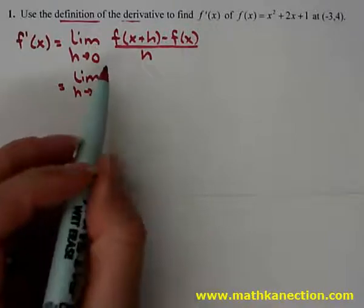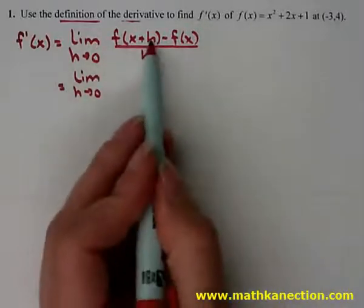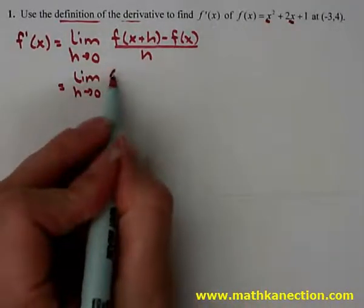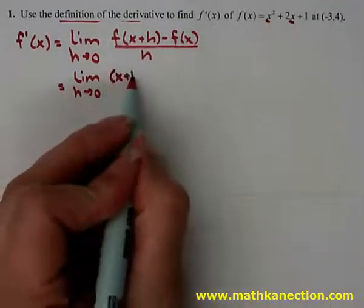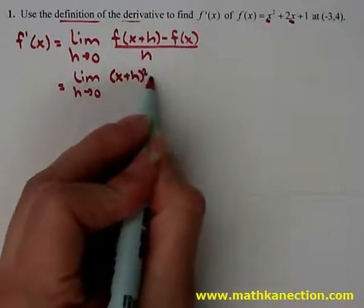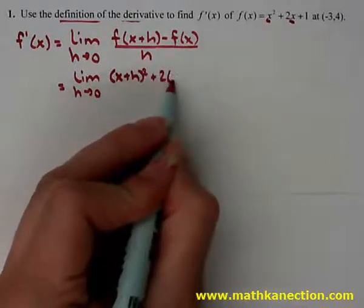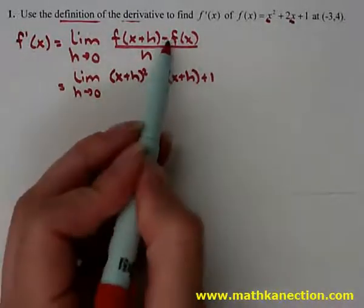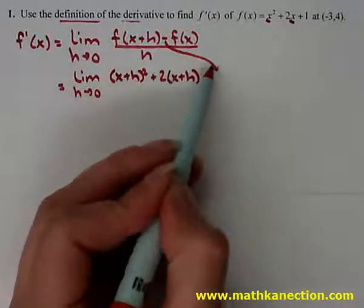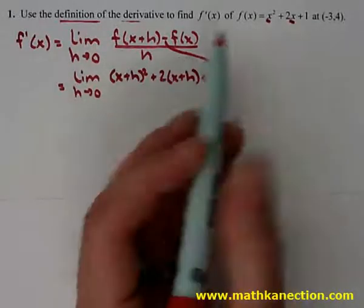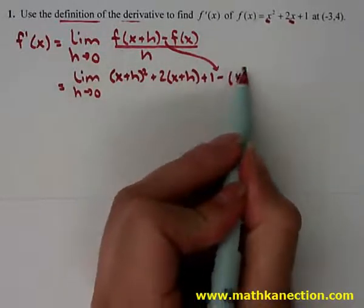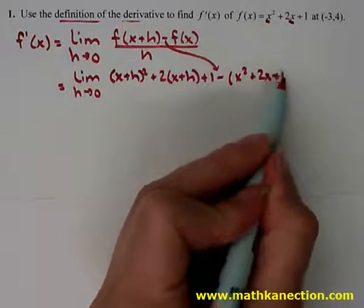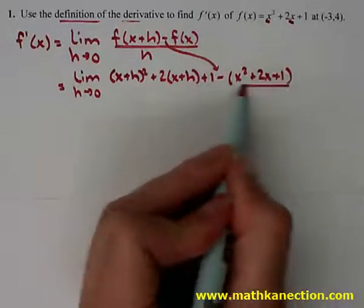So the limit as h approaches 0: take x plus h and put it into the function for every value of x, giving the quantity x plus h squared plus 2 times the quantity x plus h plus 1, minus the original function x squared plus 2x plus 1, all over h.